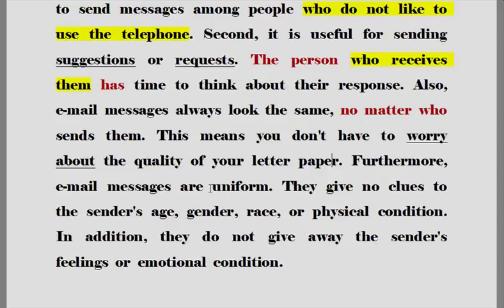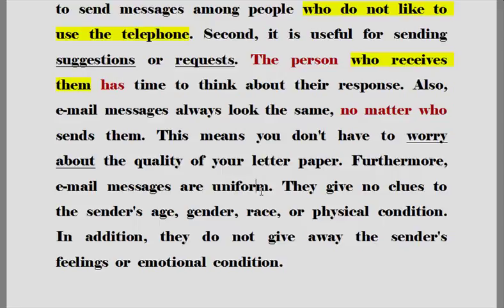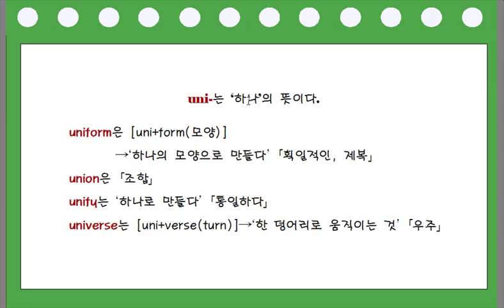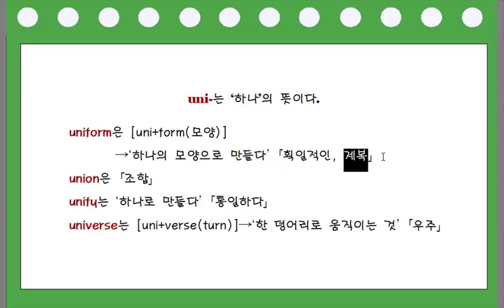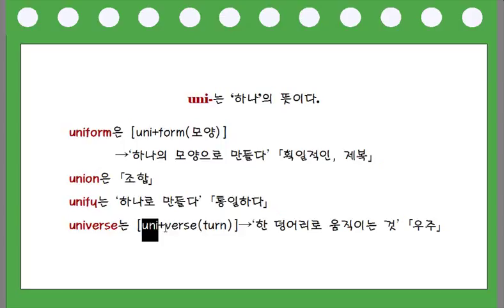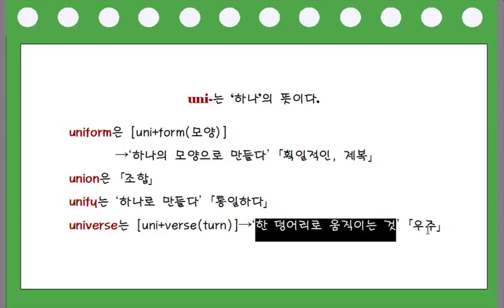더욱이 이메일 메시지는 균일적이다. 'uniform' — 'uni'는 하나라고 하는 의미가 있죠. 'form'은 모양입니다. 즉 하나의 모양으로, 형용사로는 균일적인, 명사로는 제복이라고 하는 뜻이 있고요. 'union'은 하나로 뭉친 단체, 조합. 'unify'는 하나로 만들다, 즉 통일하다. 'universe'는 'uni'(하나) + 'verse'(돌리다, 움직이게 하다), 하나의 덩어리로 움직이는 것, 즉 우주라고 하는 뜻이 있습니다.